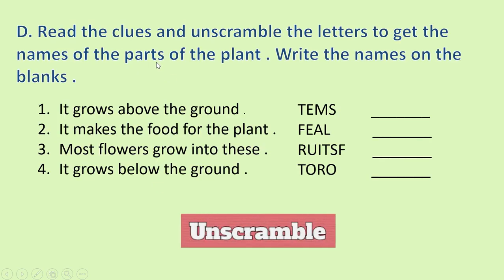Now, D part. Read the clues and unscramble the letters to get the names of the parts of the plant. You have to unscramble these words, these alphabets, these letters and you will get the correct name for the part of the plant. Okay, write the names on the blanks. Here you have to write the names in the blanks.